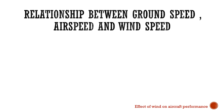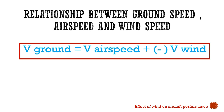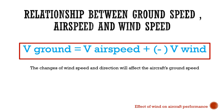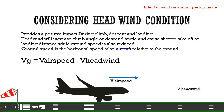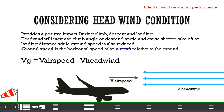Usually there is a relationship between ground speed, airspeed, and wind speed. Based on this, they manipulate the value of headwind and tailwind. That is, V_ground equals V_airspeed plus or minus V_wind. From this equation, it is obvious that changes in wind speed and direction will affect the aircraft's ground speed. For example, if the wind blows in the opposite direction to the airplane's motion, V_wind will be negative, so to calculate the ground speed, subtract the wind speed from the airspeed.